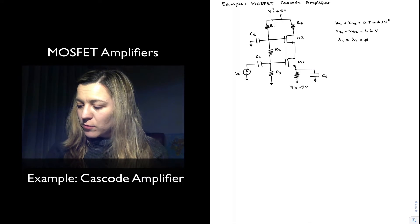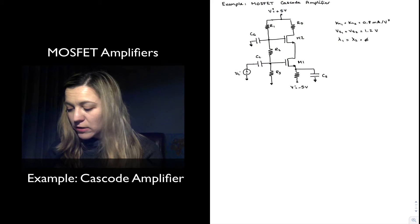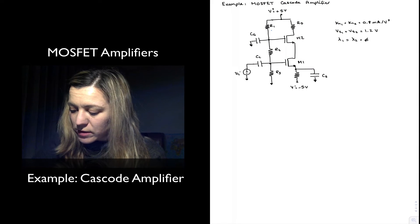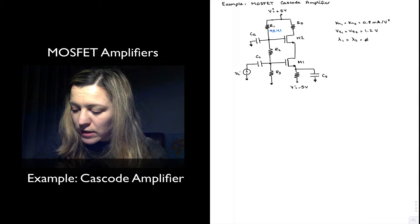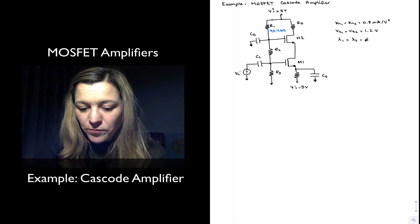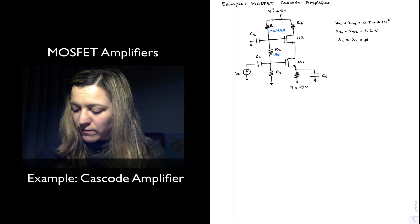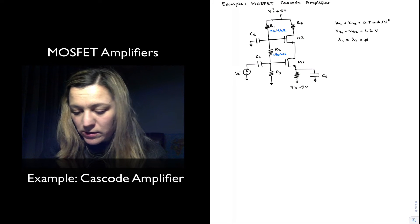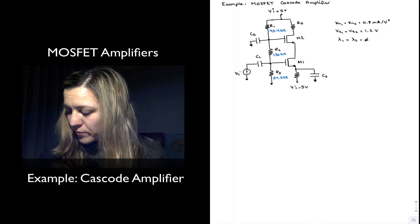I'm going to enter some resistor values so that we can do our calculations. R1 is equal to 95.4 kilo ohms, R2 is 150 kilo ohms, and R3 is 54.6 kilo ohms.